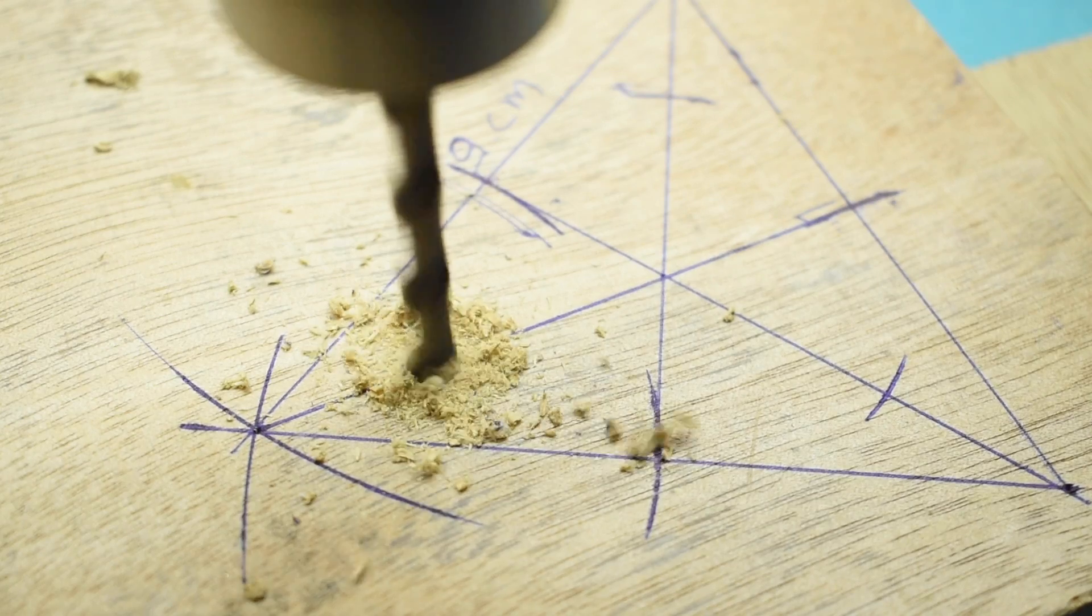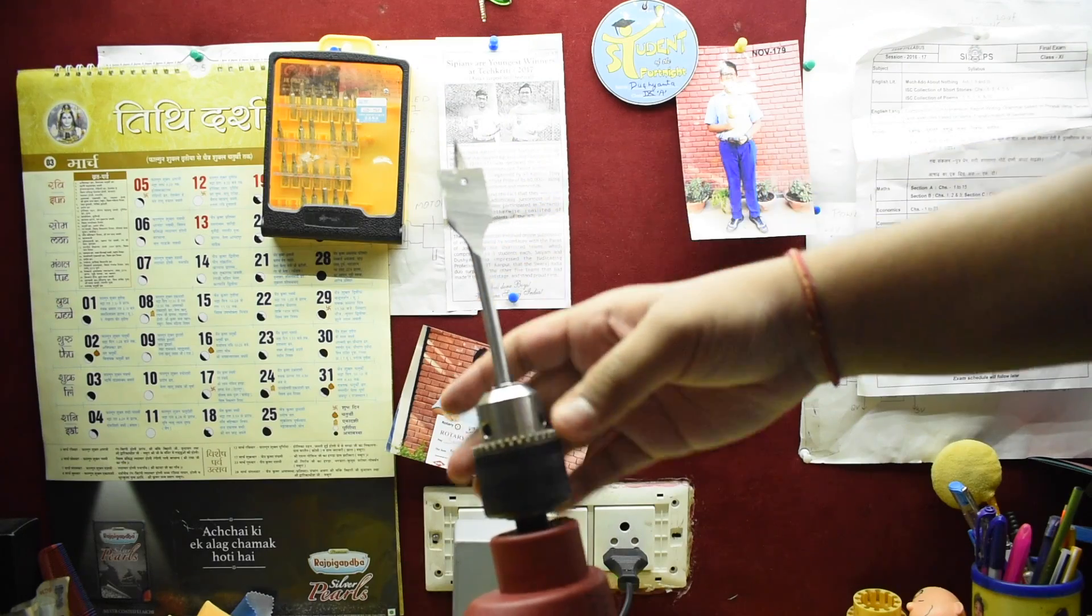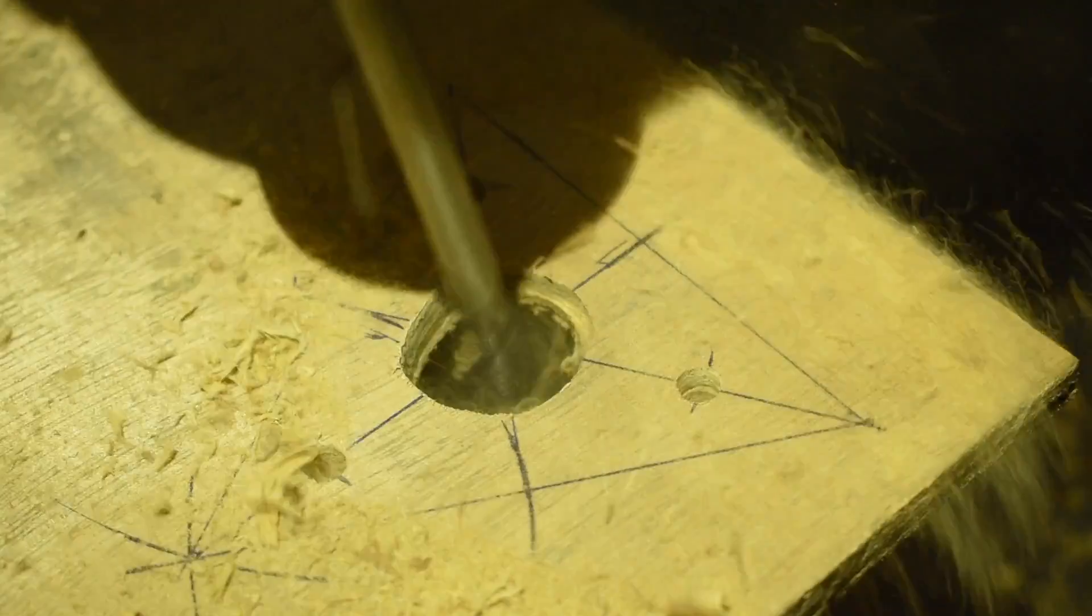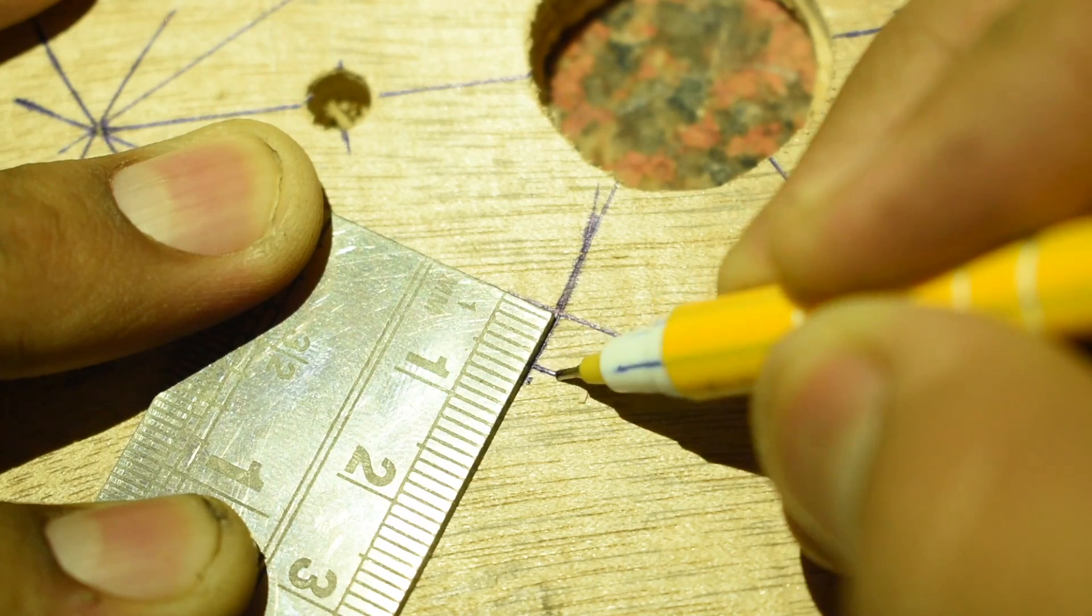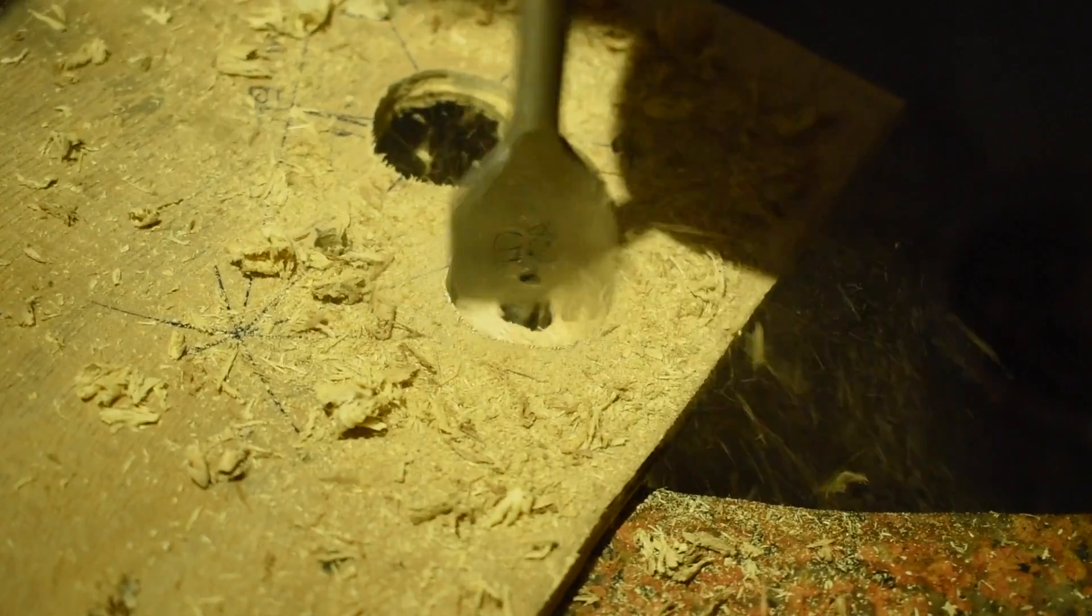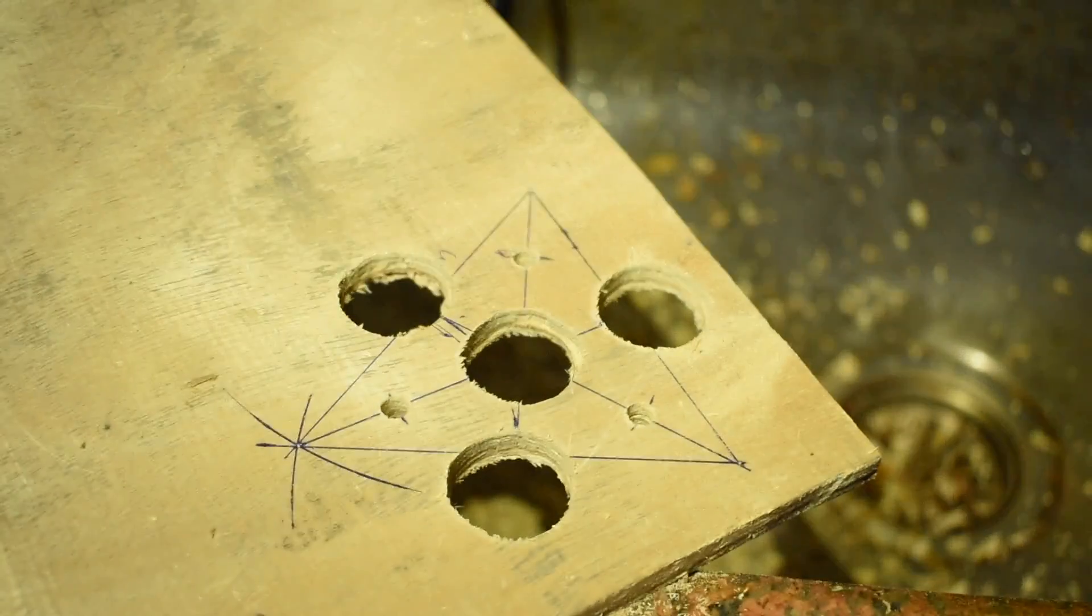Drill a hole on this point with a 5mm drill bit. Now take a 25mm or 1 inch drill bit and make a hole at the centroid of the triangle. At a distance of 0.5cm from the midpoints of the sides, make one hole using the same 1 inch drill bit.